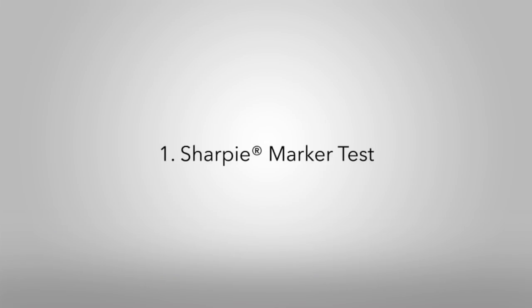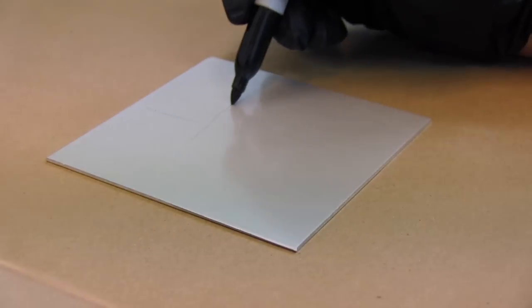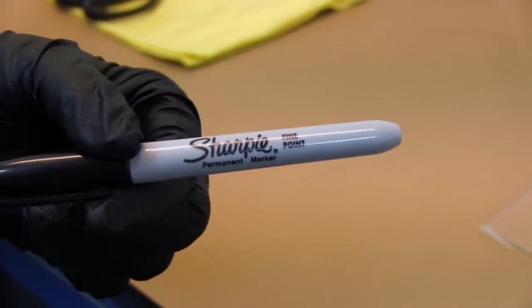Sharpie Marker Test. Place the fully cured Gentoo coated item on a clean, flat surface with good lighting. Draw one horizontal line and one perpendicular line on the item to be tested using a fine point Sharpie permanent marker.